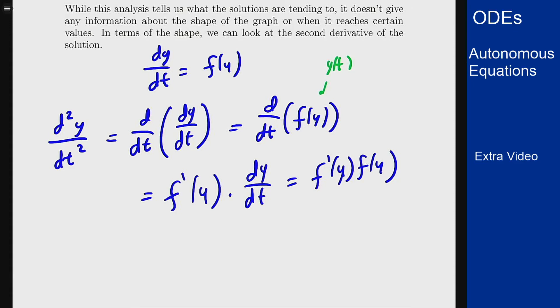So if f prime of y times f of y is positive, that means the second derivative is positive and my graph is concave up, and if it's negative my graph is concave down. So we can basically state something like this is the following.